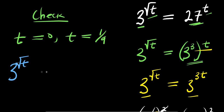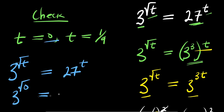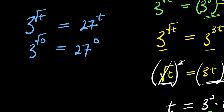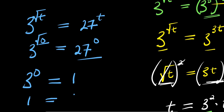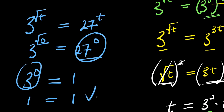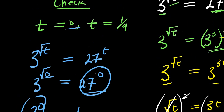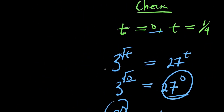If t equals 0, we have 3 power square root of 0 equals 27 power 0. Square root of 0 is 0, so this becomes 3 power 0 equals 27 power 0. Any number to the power of 0 is 1, so 1 equals 1. That satisfies the equation.